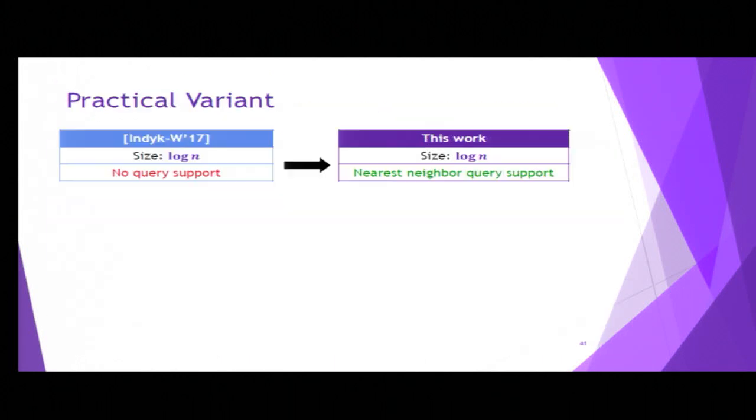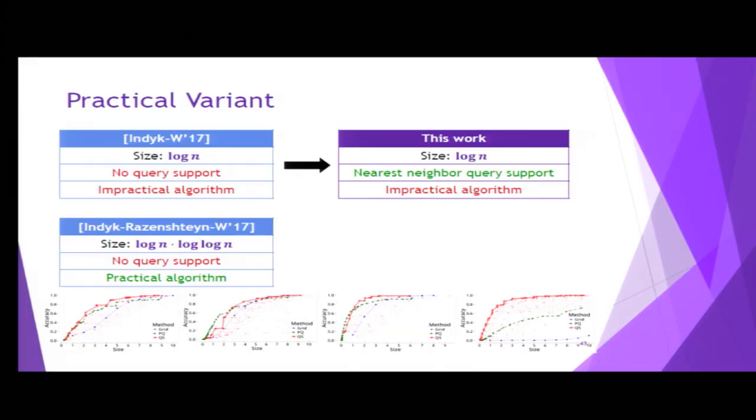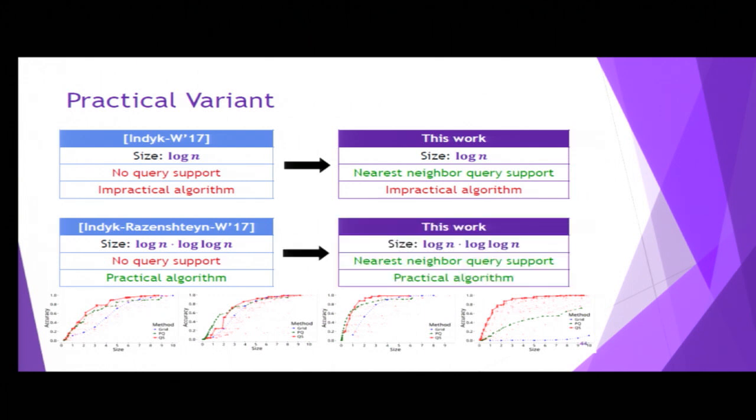One last remark about the results. As I said, we sort of fixed our own previous work that had log n bits per point, and we had nearest neighbor query support. But both of these algorithms are not practical. The proofs are algorithmic. They give you an efficient algorithm. But it's not an algorithm that you would ever want to implement, which is typically the case with theory results. We partially fixed it in the last NIPS. We had a joint work with Ilya Razenshteyn, where we gave a variant of the same algorithm that uses slightly more bits, log n times log log n, which is still much better than Johnson-Lindenstrauss. But it was also practical to implement, and it actually compared well empirically to state-of-the-art algorithms from the empirical literature. But it also didn't have any query support, and we fixed it here with the same techniques, and we got a sketch that has provable size bound, provable query support, and is practical to implement.